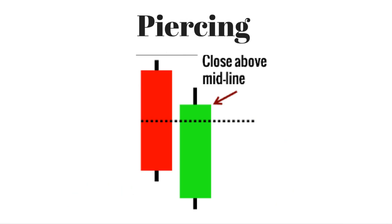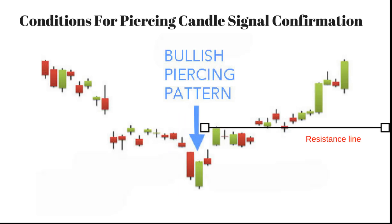Piercing pattern: the piercing pattern is viewed as a bullish candlestick reversal pattern, similar to the bullish engulfing pattern. A piercing pattern occurs when a bearish candle is followed by a bullish candle, and that bullish candle's close should be at the middle of the bearish candle.